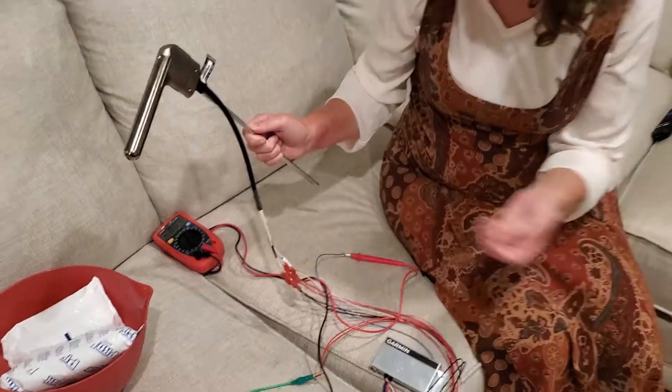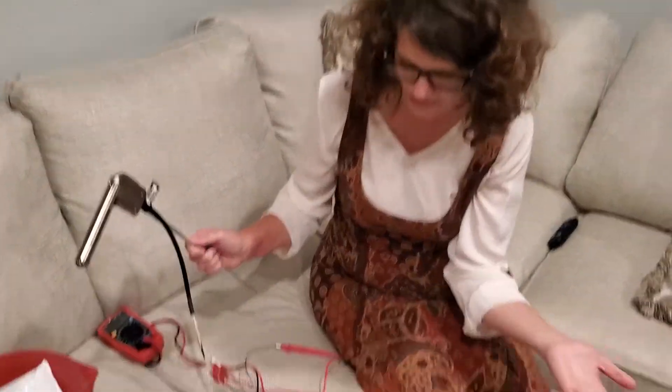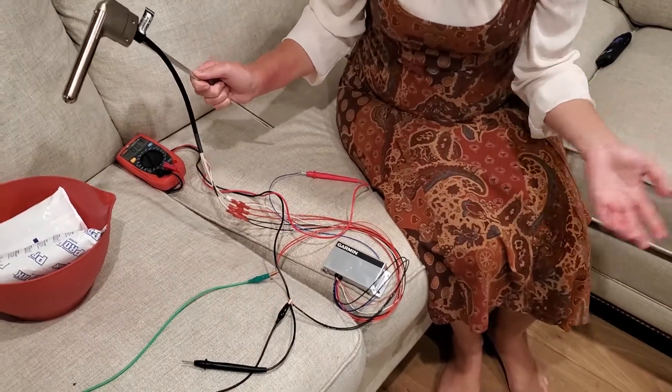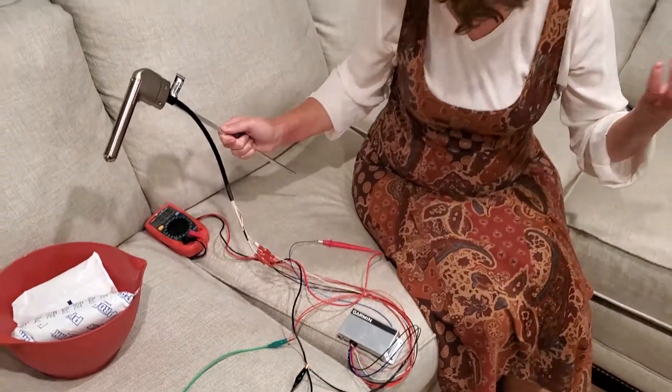The only manual we could find for the heated pitot tube comes with the G3X. We might not even put in a G3X, but that's the only manual that describes it, so what can you do?